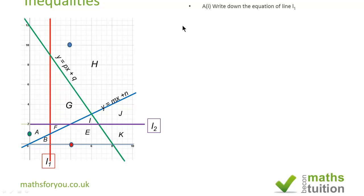For part A we've got four subsections: write down the equation of line 1, write down the equation of line 2, find the values of m and n in y equals mx plus n, and the value of p and q in y equals px plus q.